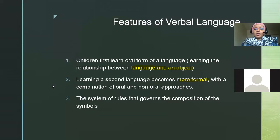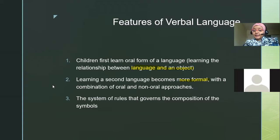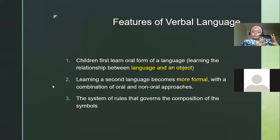The third feature of verbal language is the system of rules that governs the composition of symbols. Going back to semiotics — how do I use specific words in specific situations? Who tells me to use which words where? All of these come from long experience. Even as a child, you know what kind of words to use with this person — your parents, your friend, your boss.